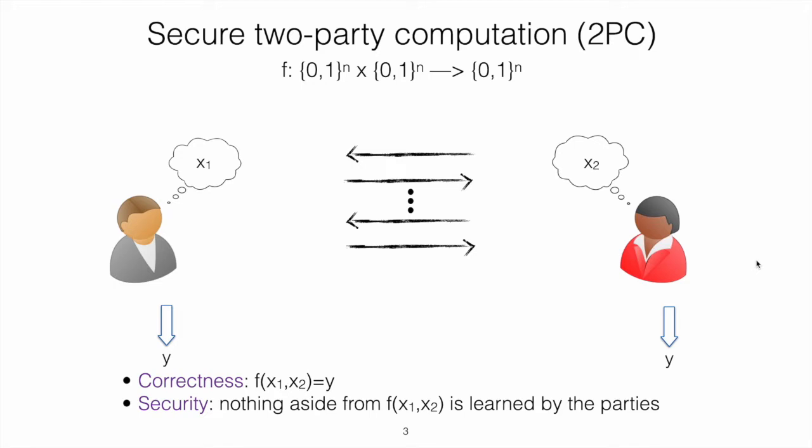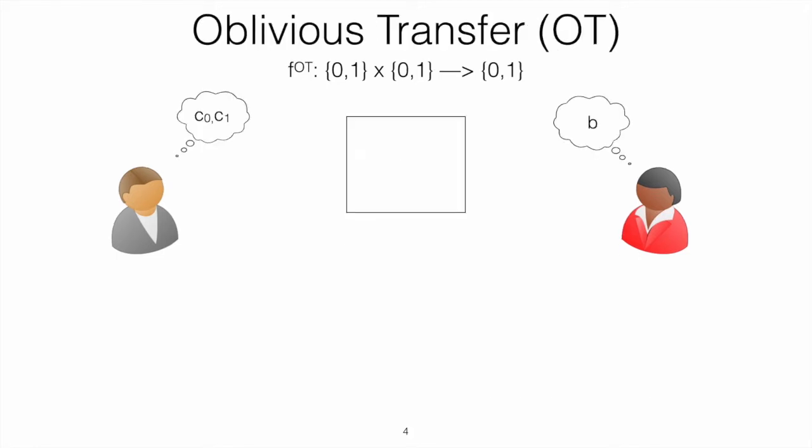All the protocols we propose in our paper are secure in the simulation-based paradigm and are proven secure with respect to black-box adversaries. So the simulator can only query the adversary and does not know the code of the adversary. In the main part of this talk, we will be focusing on a very specific functionality.